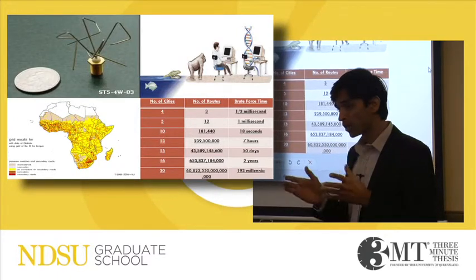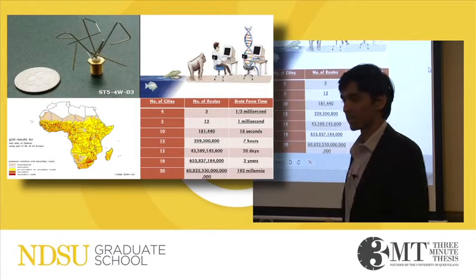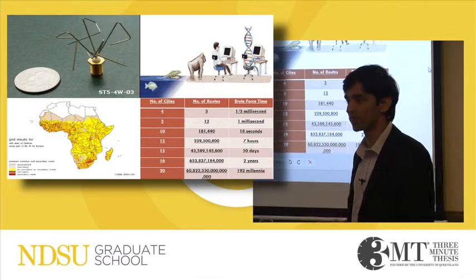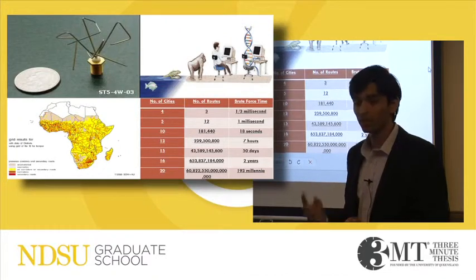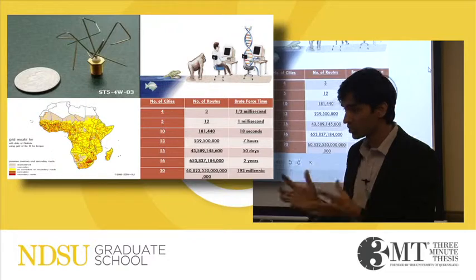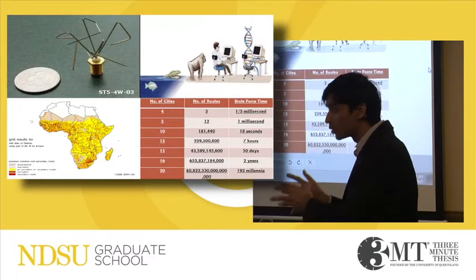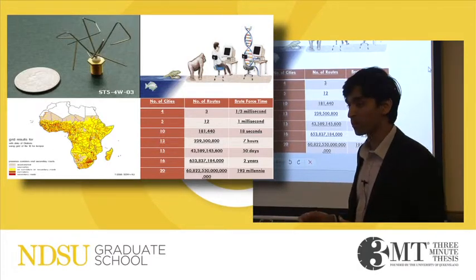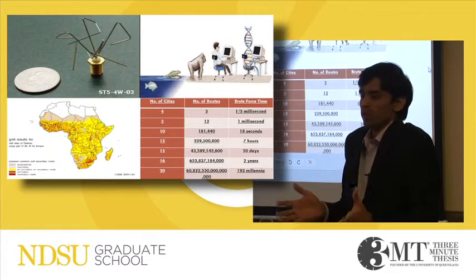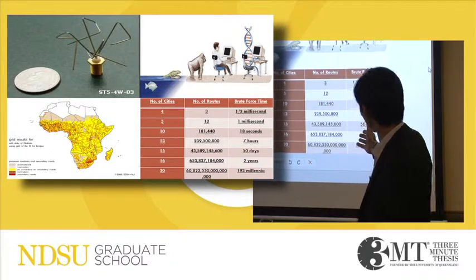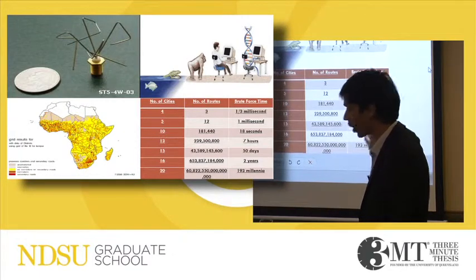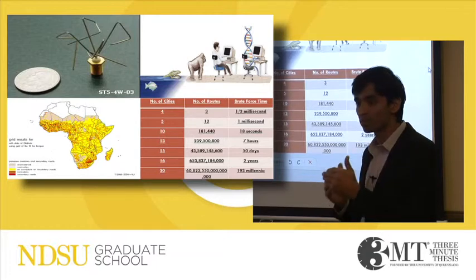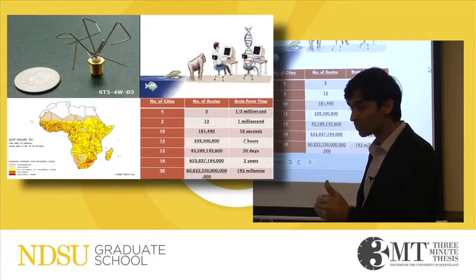What implications does that have? Just look at the water-torn area in Africa. If you want to distribute money, food, or water to needy people, there are so many factors to take into consideration — how many people we have to serve, how many resources we have. In the end, an algorithm will do the job, computing the best routes to get there. For just 15 cities, the amount of time required to get the best route is actually 50 days. If we apply my algorithm and improve upon it by 20% of running time, that means we save 10 days.